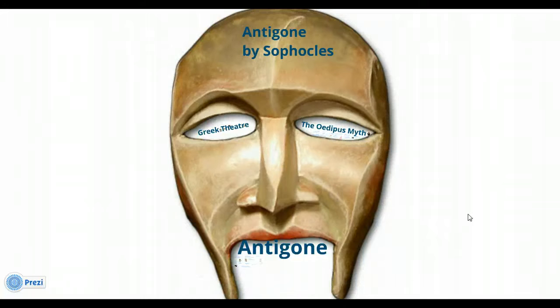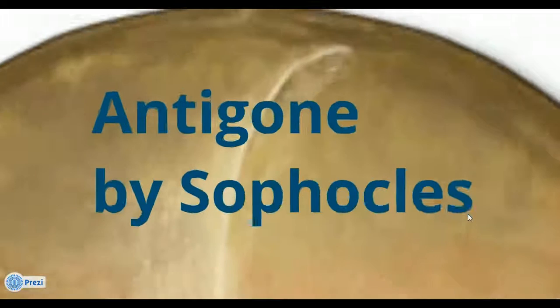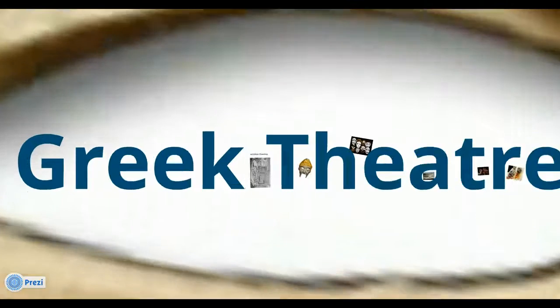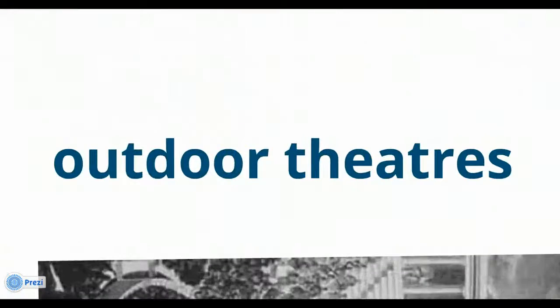I presented this with a projector and I was talking over the top of this presentation. I started with a mask so that students got to see what Greek theater masks look like. This is Antigone by Sophocles. You can see how it's very visually stimulating and there's a lot of good movement.